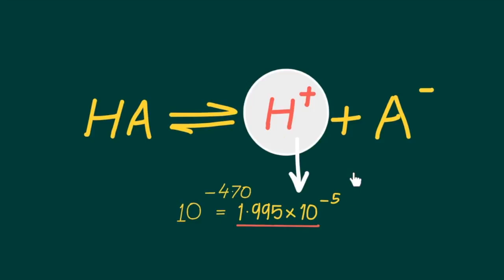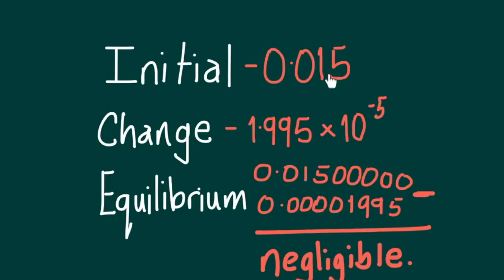Using the information for the concentration of hydrogen ions we then determine the concentration of the conjugate base A negative. The initial concentration of the solution was 0.015, and at equilibrium because we know the pH value then we can say that this initial concentration has changed by this amount.